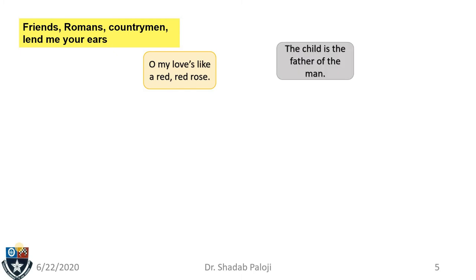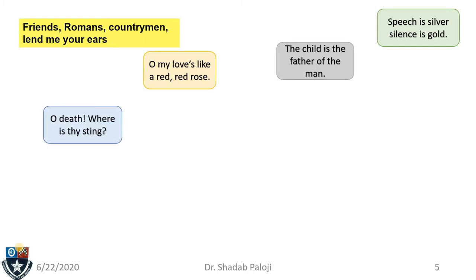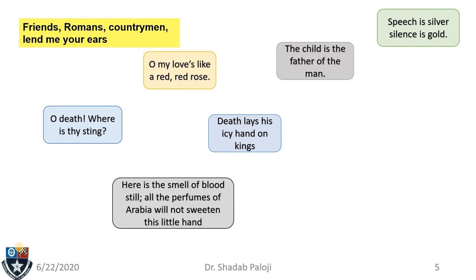The child is the father of the man — a very famous proverb that we have heard many times, especially in terms of innovations. Then: speech is silver, silence is gold. O death, where is thy sting? Now death lays his icy hands on kings. Here is the smell of blood still — all the perfumes of Arabia will not sweeten this little hand. Yes, Macbeth. A very famous line from Macbeth.